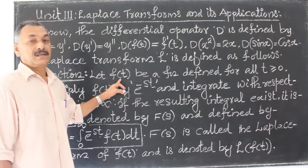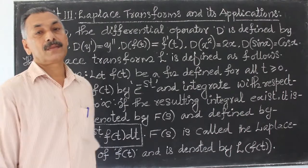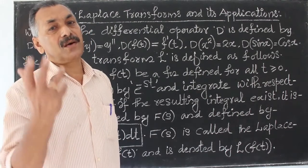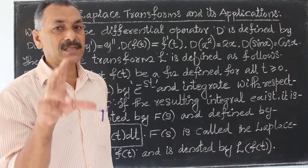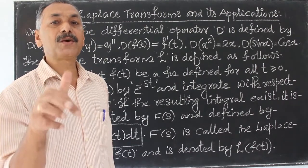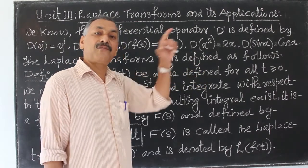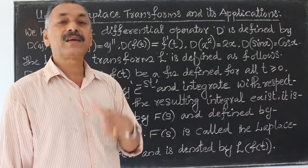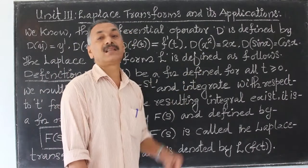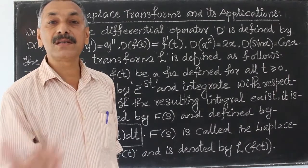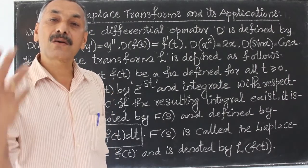Definition: Let f of t be a function defined for all t greater than zero. We consider a function of t — not x. For example, f of t equals t squared, f of t equals cos t, f of t equals e raised to 2t, f of t equals cosh 2t, etc. That function is defined for all t greater than zero.